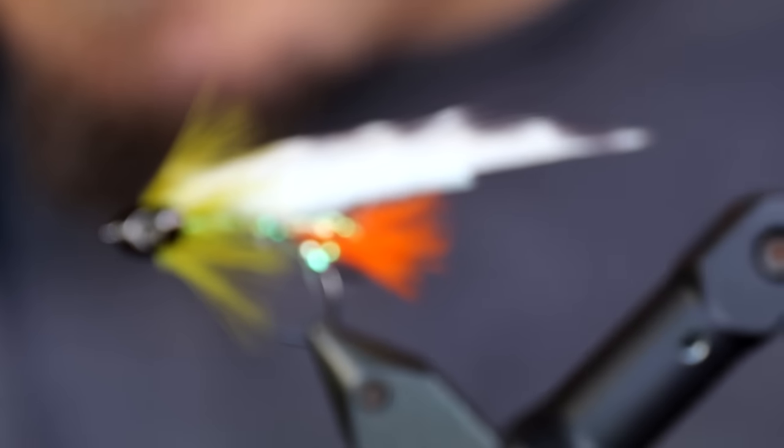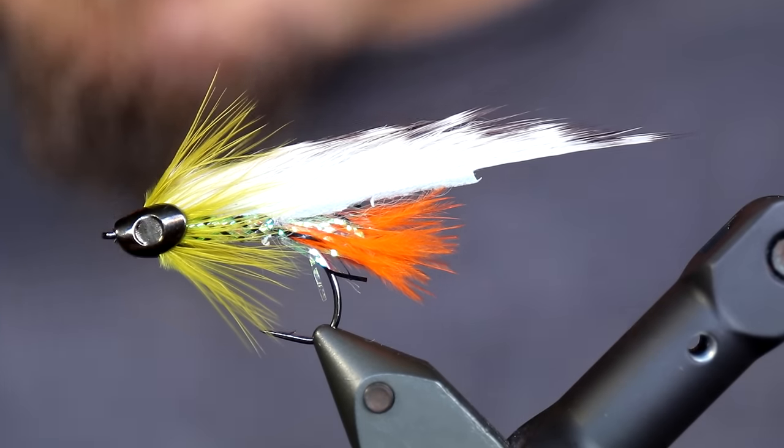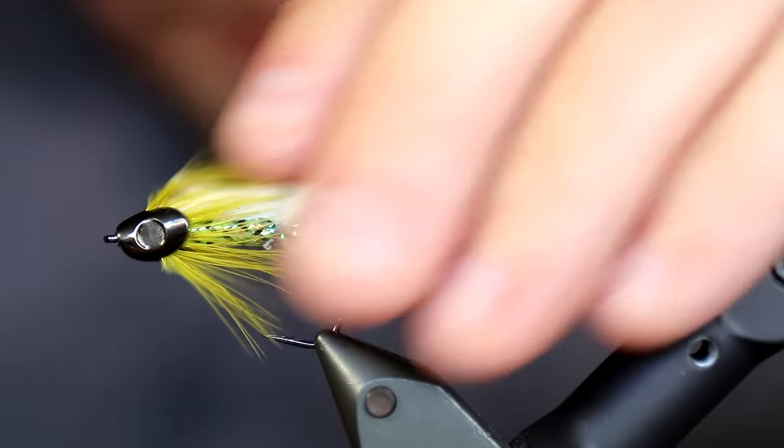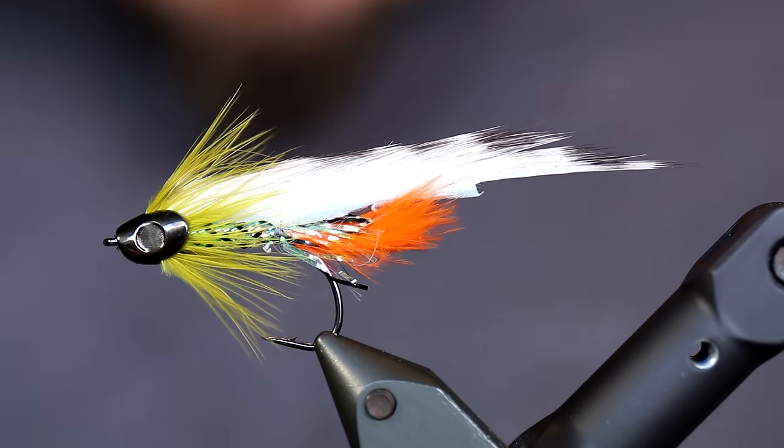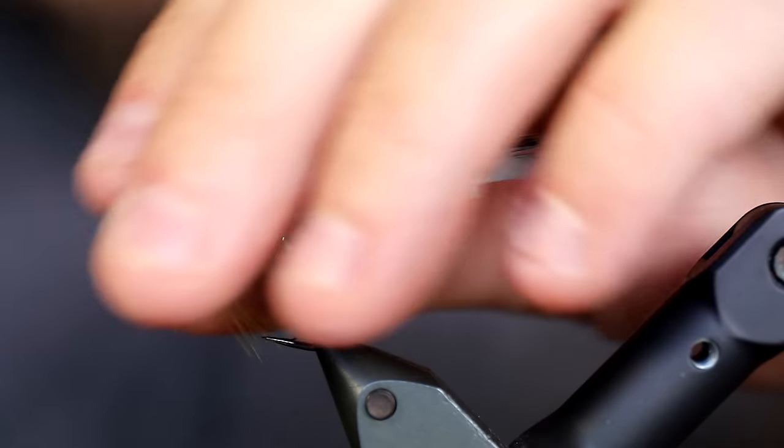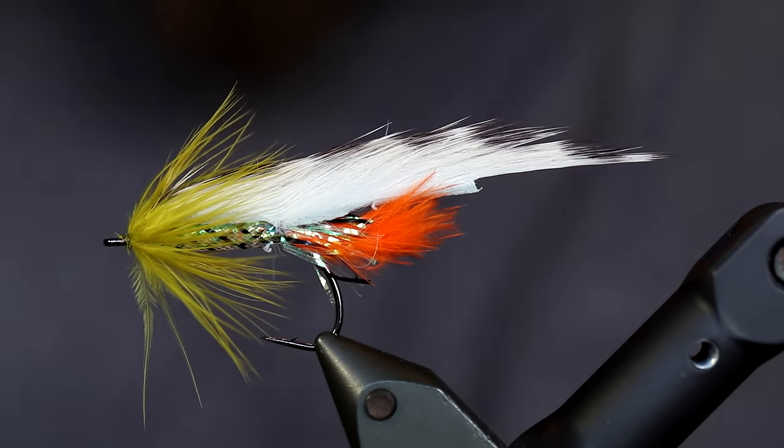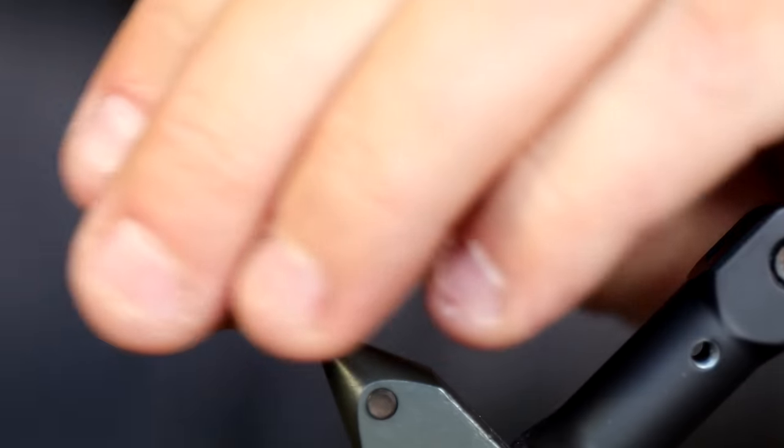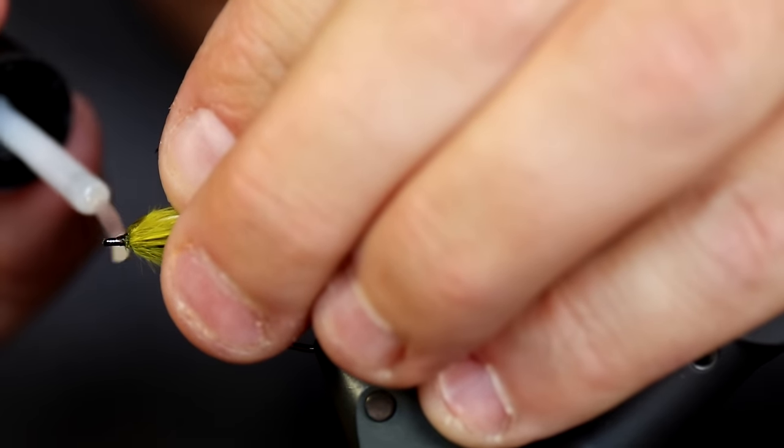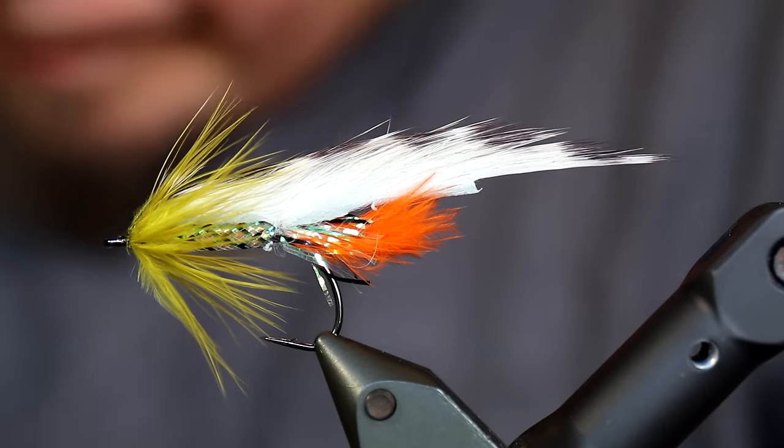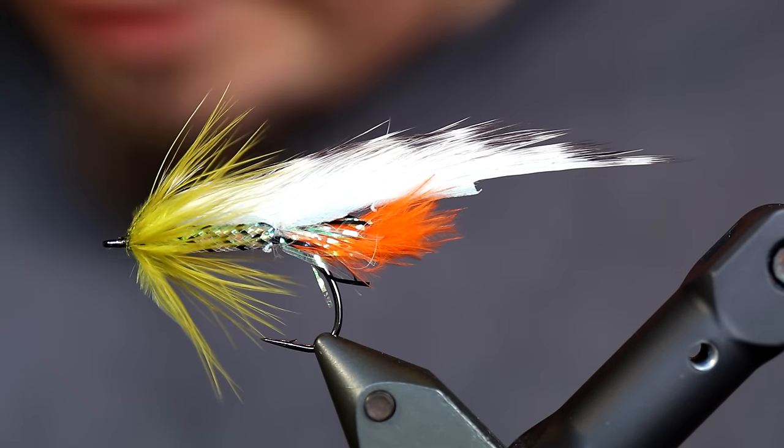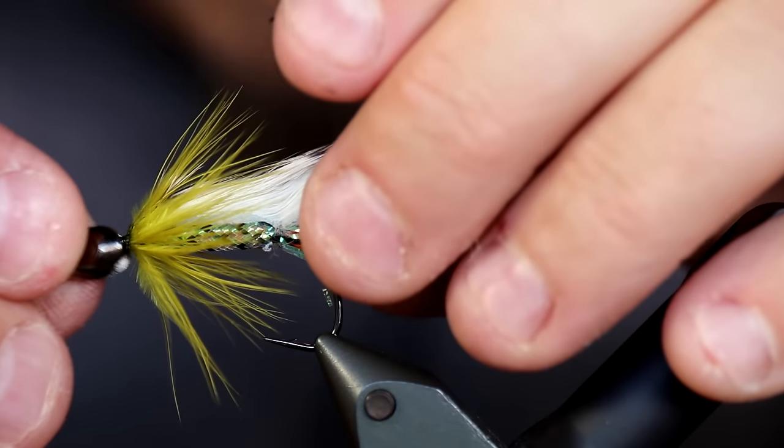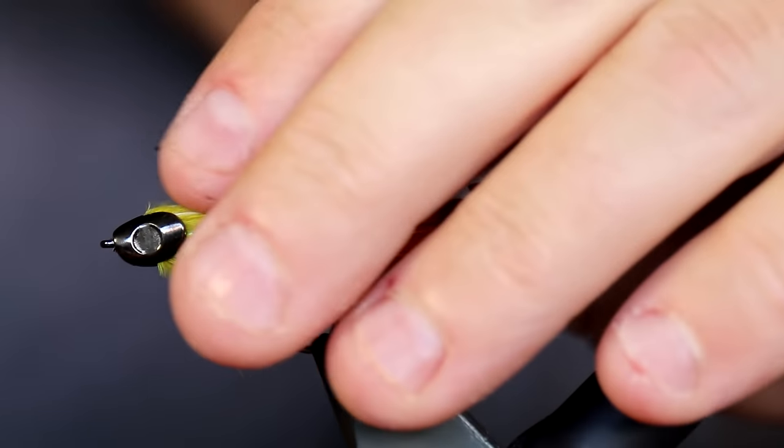And also it ensures that your fly, your head and stuff like that is not going anywhere. Of course, just to be certain, I'm going to take a bit more super glue to make sure the head stays on there. Like so. And then of course you need to add some eyes to this. So basically. There it is.